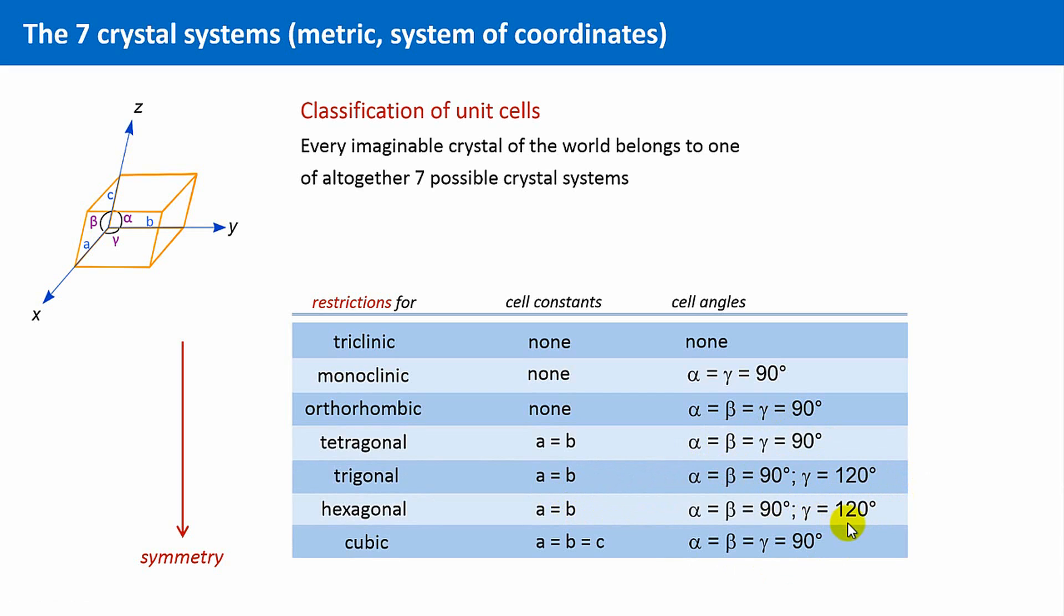And finally, the crystal system with the highest symmetry, the cubic one. There are no degrees of freedom left. All edges must be equal in length, and all angles are fixed to 90 degrees.